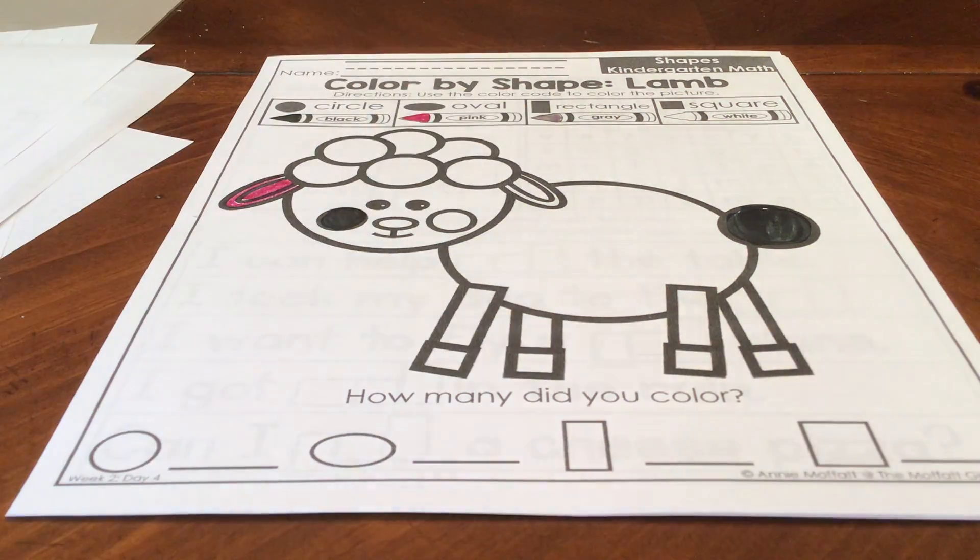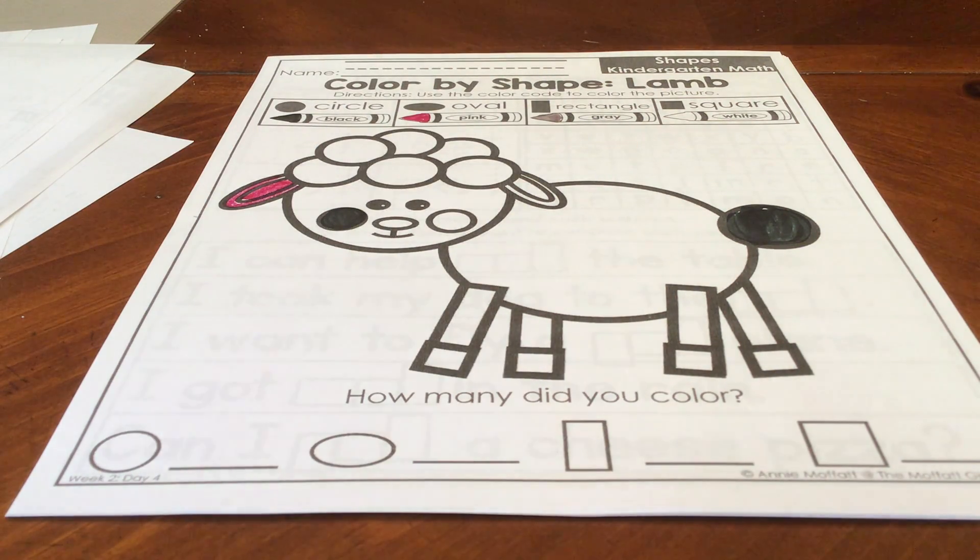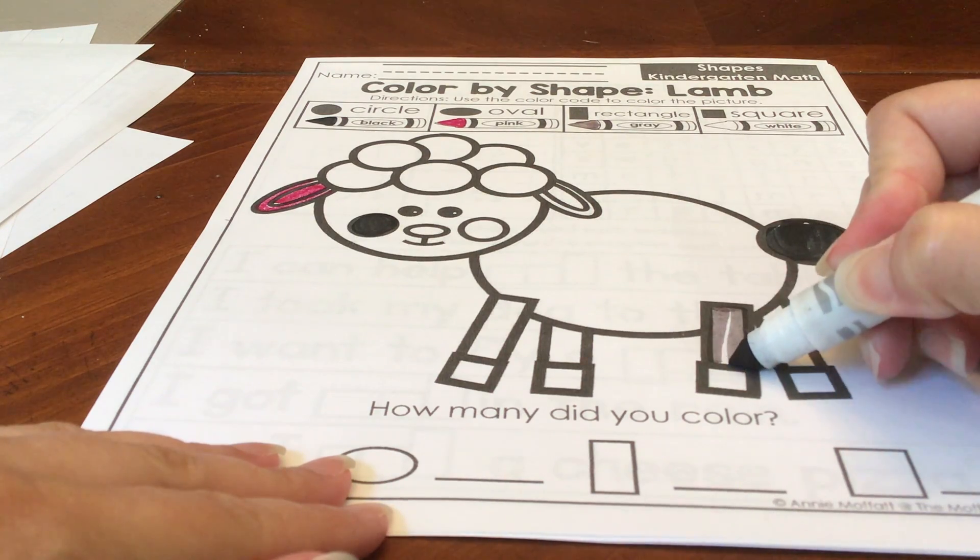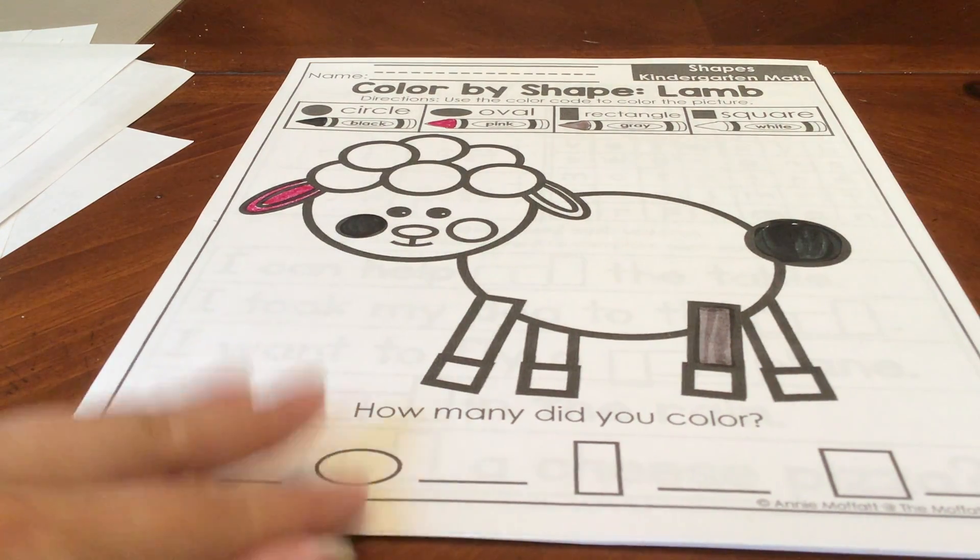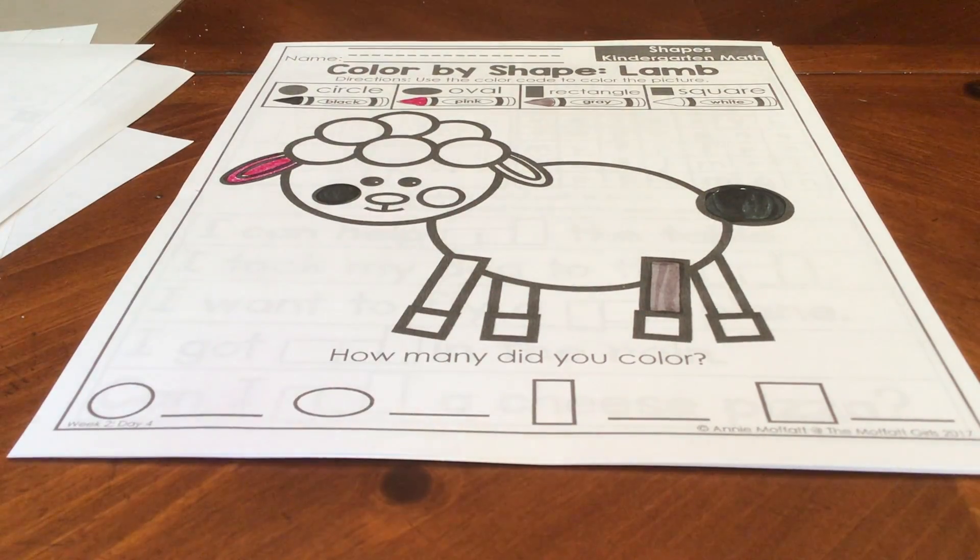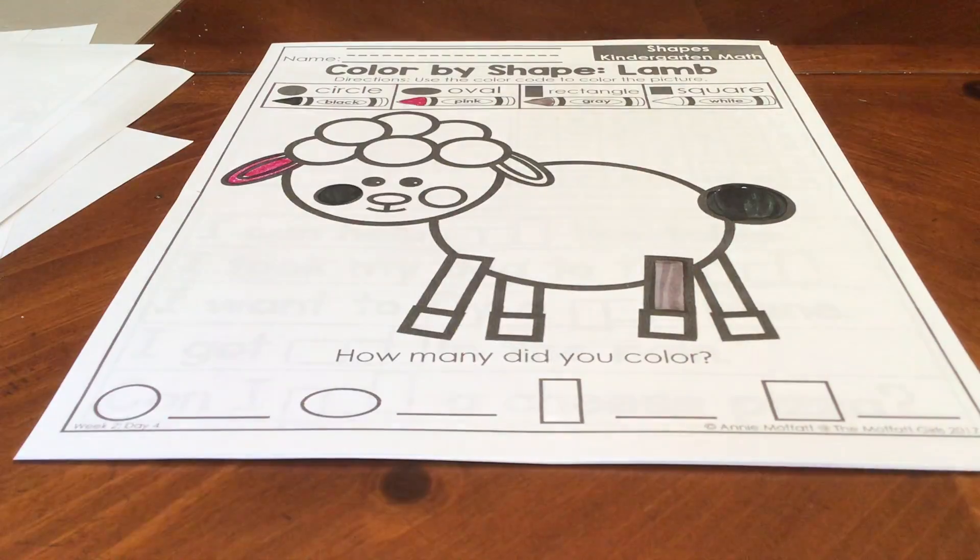The same thing with our rectangles. I'm going to find me a rectangle. Here's a rectangle. I'm going to color it gray. I'm going to find all the other rectangles and color them gray and I'm going to write the number on the line. And the same with the squares. You can color them whatever color you want to or you can leave them white and just count them and write the number on the line.